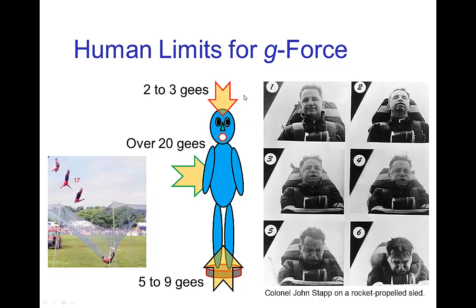The limit is even more restricted if the acceleration is downward. Due to the blood rushing to the head, we have red-out instead of blackout, which can be quite dangerous — capillaries can burst in the head. The safest acceleration or deceleration is through the back, perpendicular to the body. The human body can withstand about 20 g's or more in that case, which is why circus performers doing the human cannonball always try to rotate their body so they land on their back.